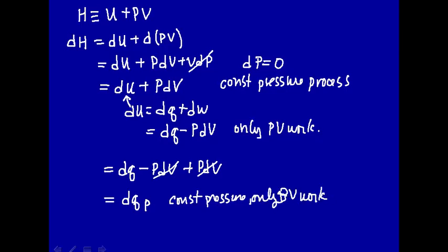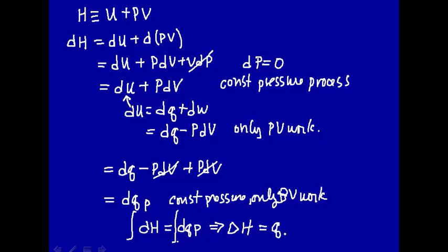The enthalpy change dH is equal to dQP. Let's integrate this — this is the differential form for enthalpy change at constant pressure. We're going to integrate from initial to final states. The integral of dH is just delta H. And the integral of dQP, which is path-dependent, is just QP. So there it is — that's the equation you learned in introductory chemistry, and we got that with a more fundamental understanding of the definition of enthalpy using differential calculus.